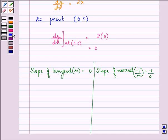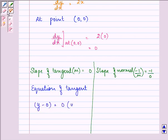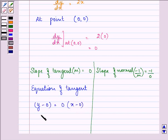Now further, equation of tangent is y minus y1 equal to slope times x minus x1. So we have y equal to 0 as the equation of tangent.